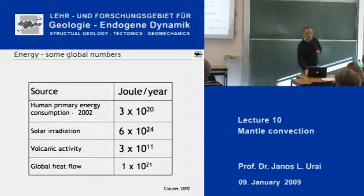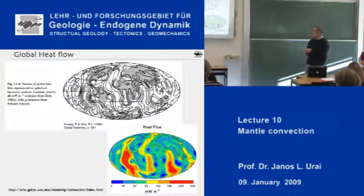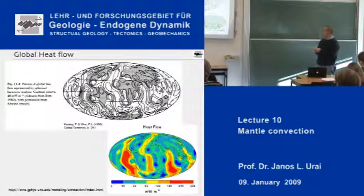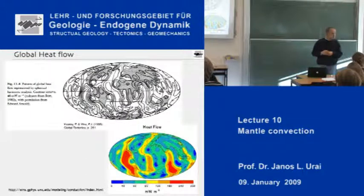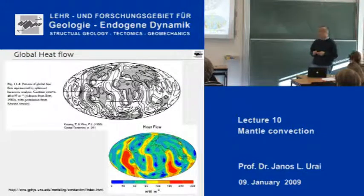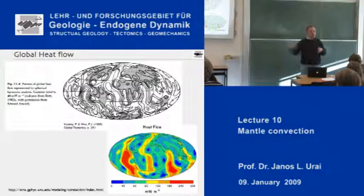This heat flow is certainly not everywhere the same. Here are two pictures of the global heat flow in milliwatts per square meter — blue is almost zero and the high red values are about 350. You can see that on many of the big cratons, like the African, North American, and South American cratons, heat flow is quite low. But in many oceanic basins, especially in the eastern Pacific and the southern Indian Ocean, heat flow can be very high. This is the first hint that something non-homogeneous is going on inside the Earth.